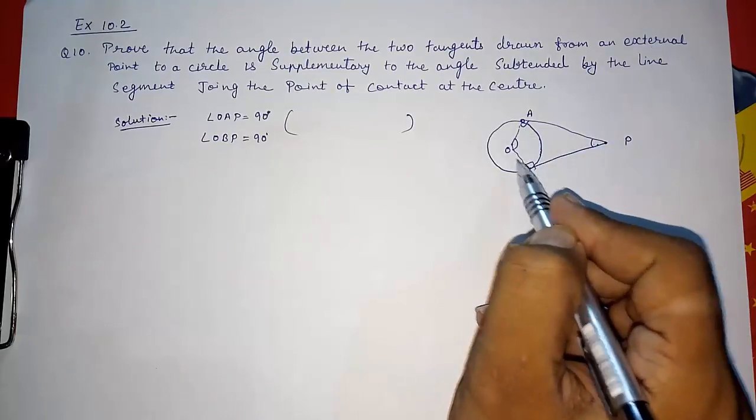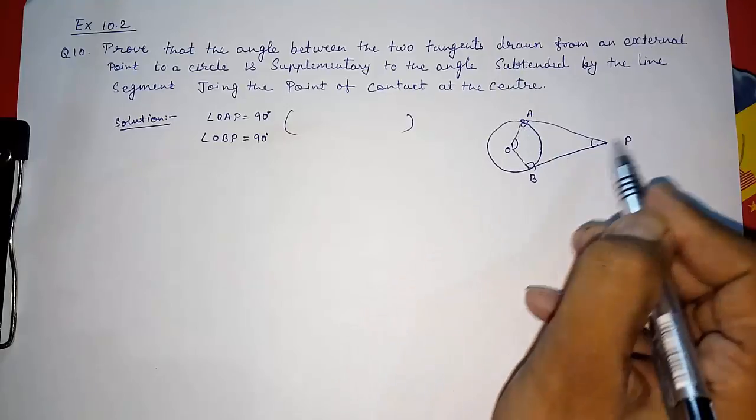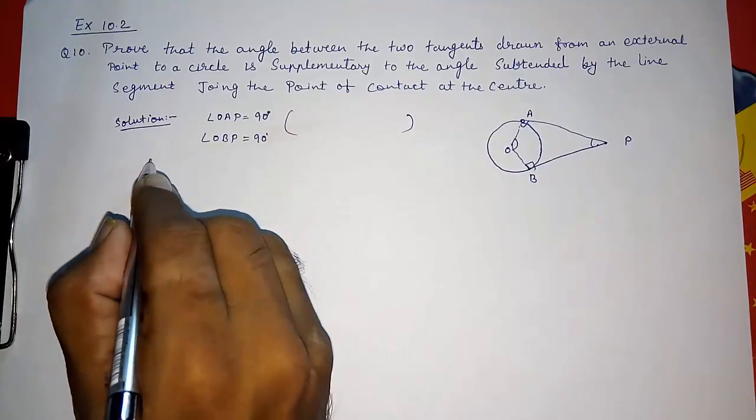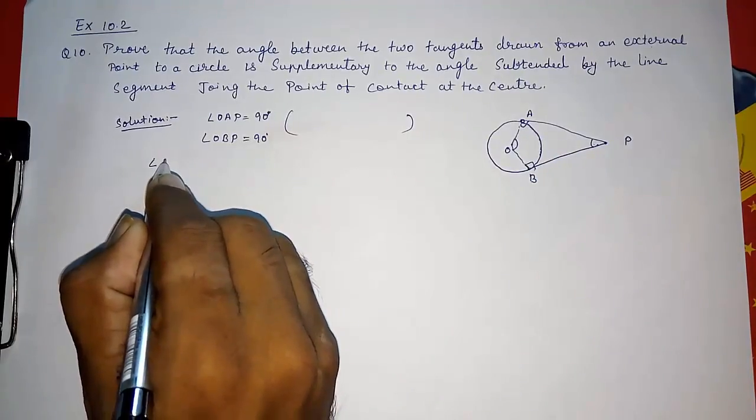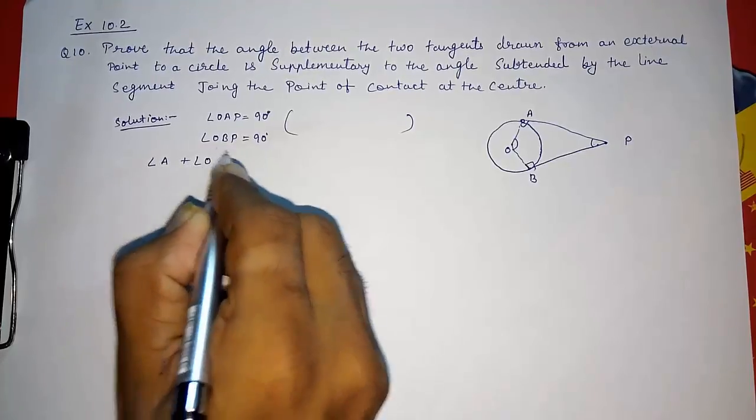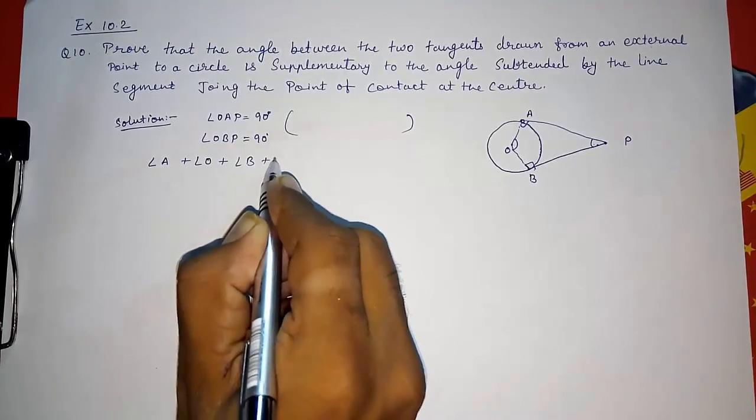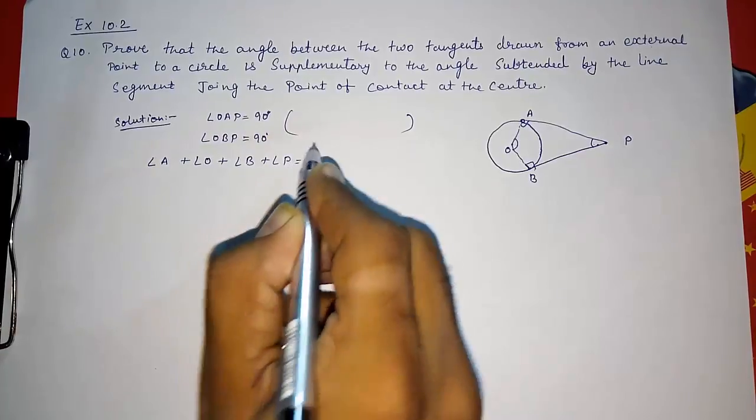You can say it is a closed figure made up of four line segments, so it is a quadrilateral. So we know that angle A plus angle O plus angle B plus angle P is equal to 360 degrees.